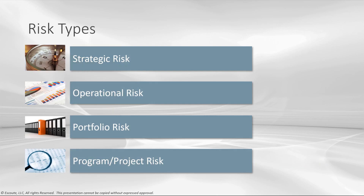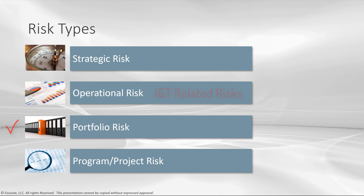We need to talk about the different types of risk. On the left-hand side we have strategic risk — risk involving an enterprise's future business plans and strategies, such as planning for expansion or going into new markets. Then there's operational risk: the potential for losses caused by inadequate systems or controls, human error, mismanagement, and natural disasters. Most organizations put IT risk under operational risk.